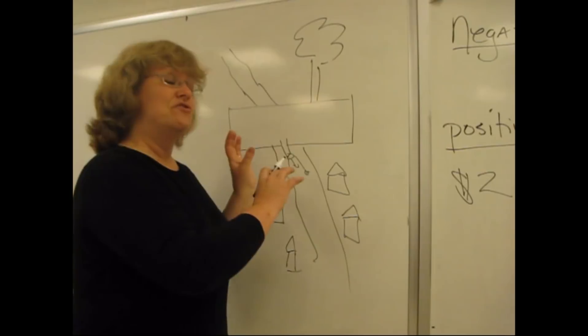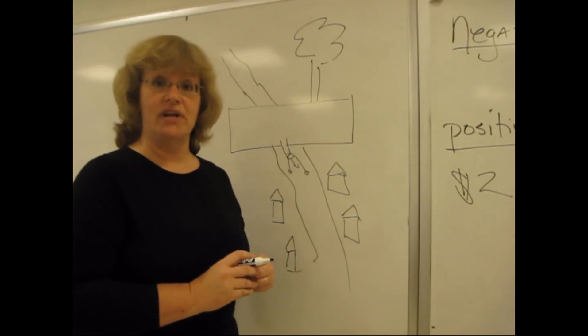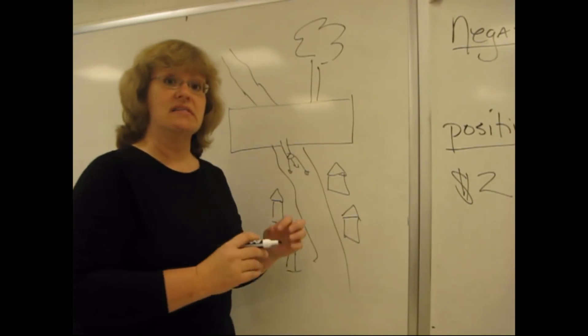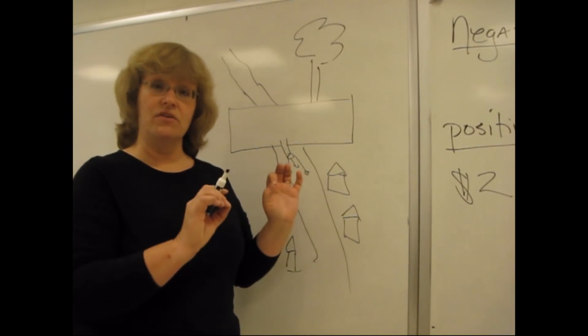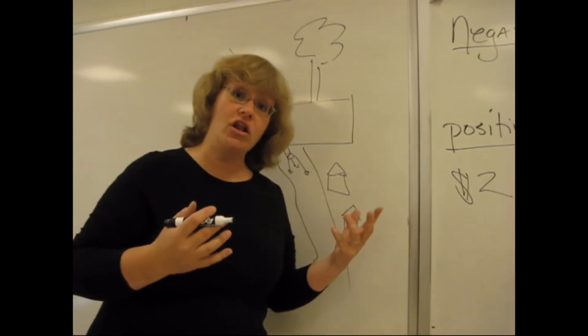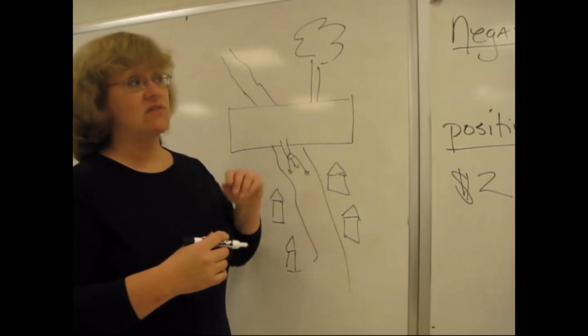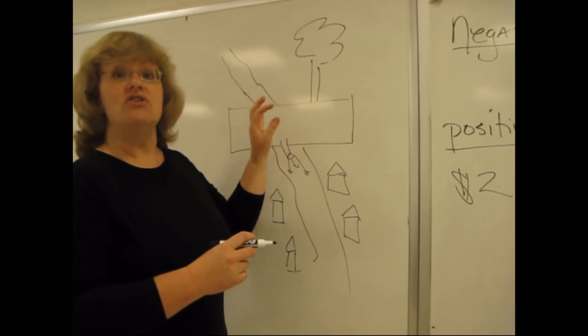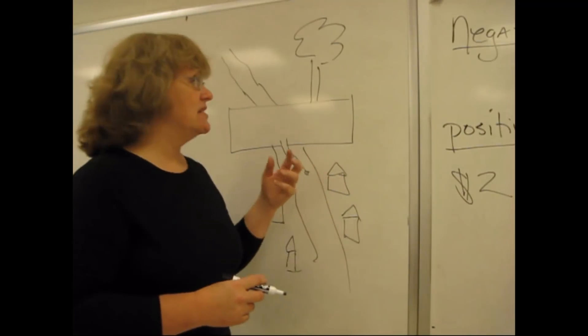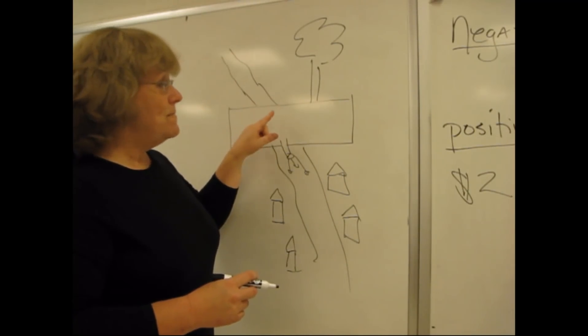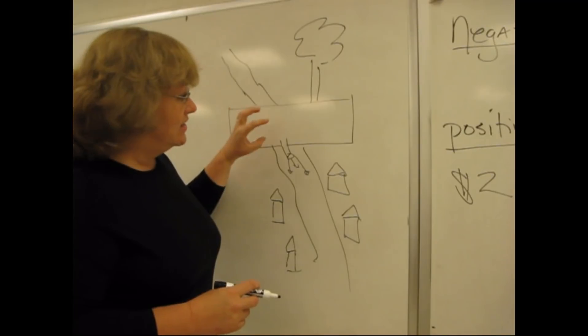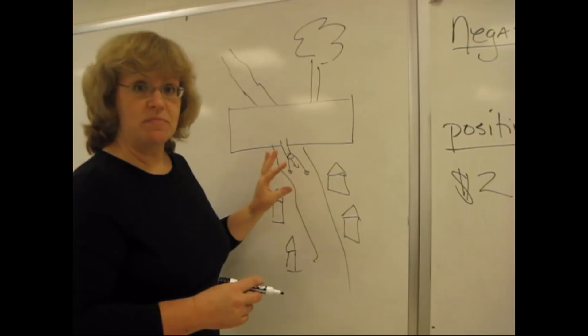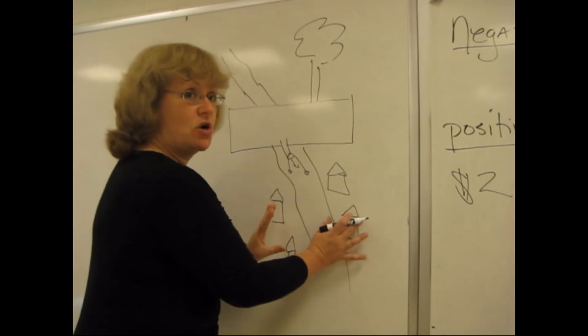Part of the reason that we intervene in markets like this, markets that have negative externalities that we've been talking about, is to protect those third parties, to make the buyer and the seller in the transaction bear all of the costs of the market transaction. And in the case of something like pollution, this particular negative externality, we have agencies like the Environmental Protection Agency that intervenes, makes this factory install equipment that cleans this water before it comes back into the environment, before it comes back into the stream.